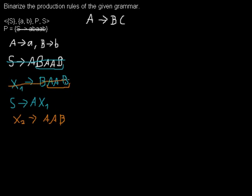And now I take this rule out and add another one for it. Now I want a new where X1 goes to B and X2. And now my longest rule has three non-terminals on the right side. I have to do it one more time.